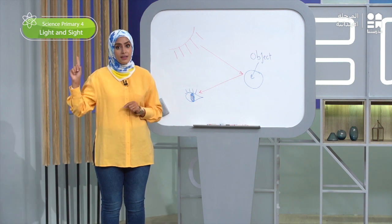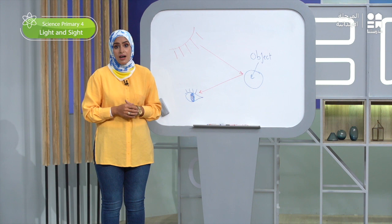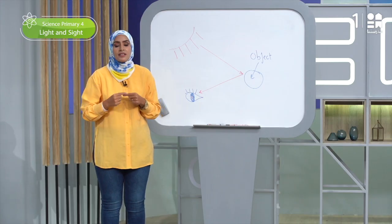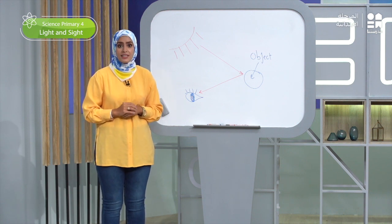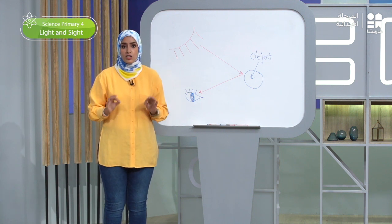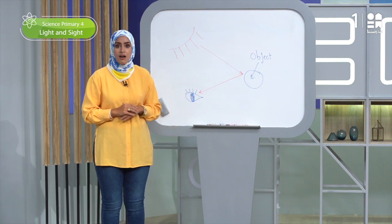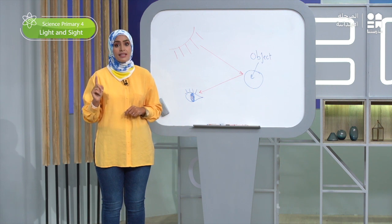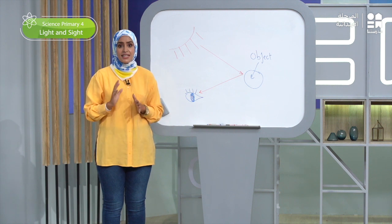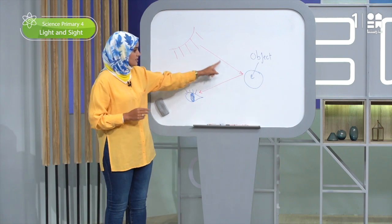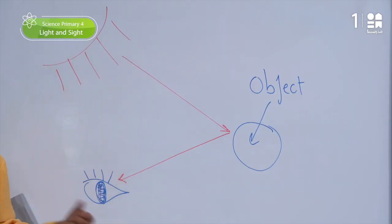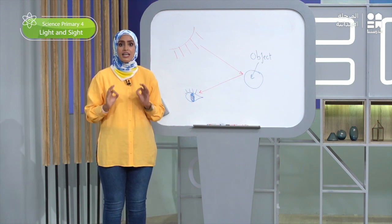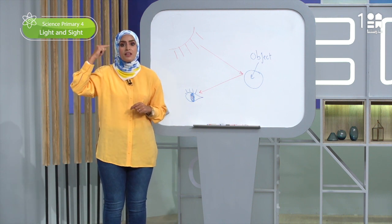The eyes must send a message to the brain, and the brain processes and explains this message so we can see. The light falls on the object, the object reflects it to the eye, and the eye sends the message to the brain, which interprets the information. For the second part of the text, the main idea is that we cannot see without light. I showed that by drawing only the eyes and the ball with no light lines — meaning no sight, because there is no light source falling on the object and reflecting to the eye.